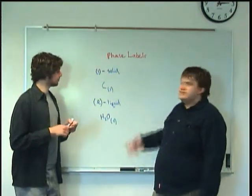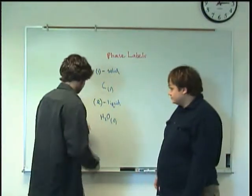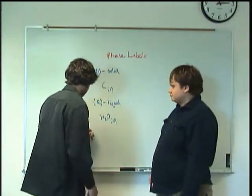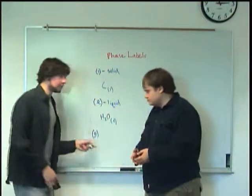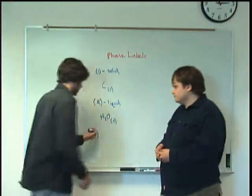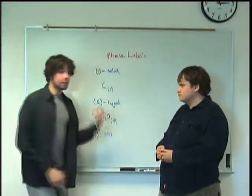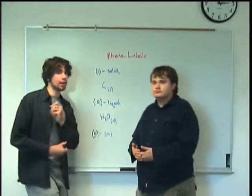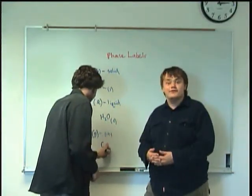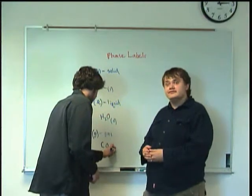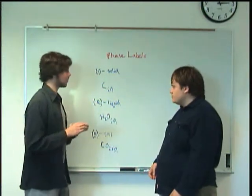Solid, liquid — and of course there's one for gas. Gas is written as parentheses with a G: (g). An example would be gaseous carbon dioxide in your reaction — CO2(g). You can actually have solid carbon dioxide; just look at dry ice.